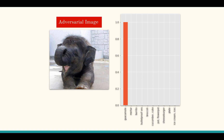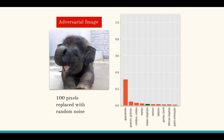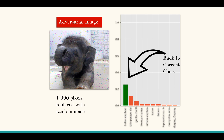How about an adversarial image? Here is an image which looks almost the same as the original but has been perturbed so that the classifier thinks it is guacamole with almost 100% confidence. Only at 100 pixel changes does the confidence of the adversarial class come down significantly, and at 1000 pixels the original class of the image is restored.